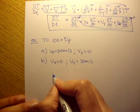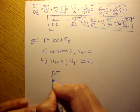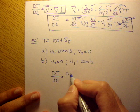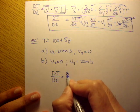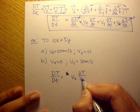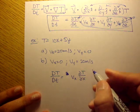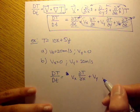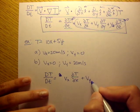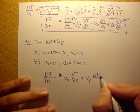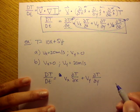So what we're left with is DT/Dt is equal to... Oops, I'm sorry. Vx ∂T/∂x, or partial temperature in respect to x, plus partial of y, or the y component of the velocity, times the partial of the temperature in respect to y.